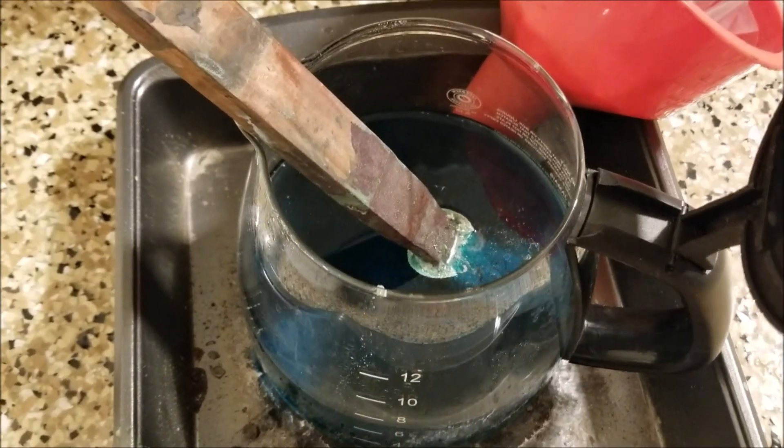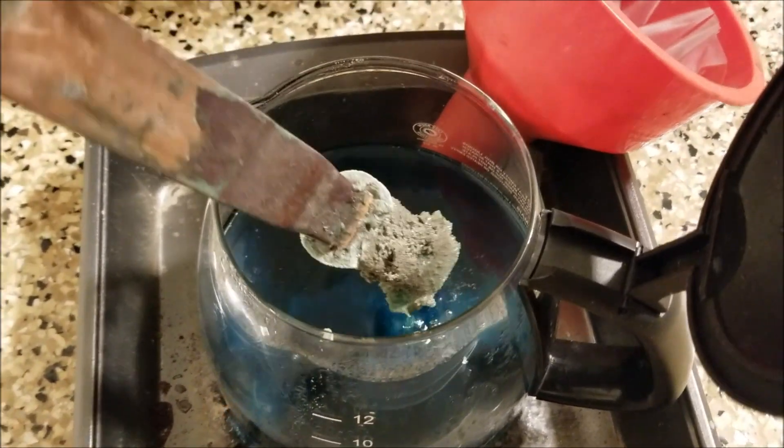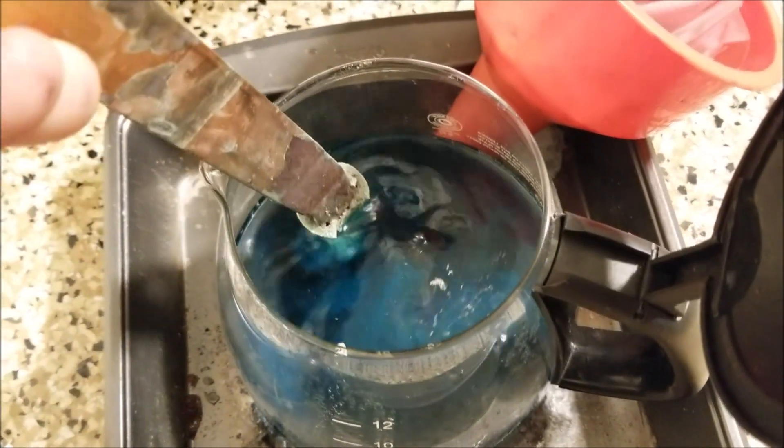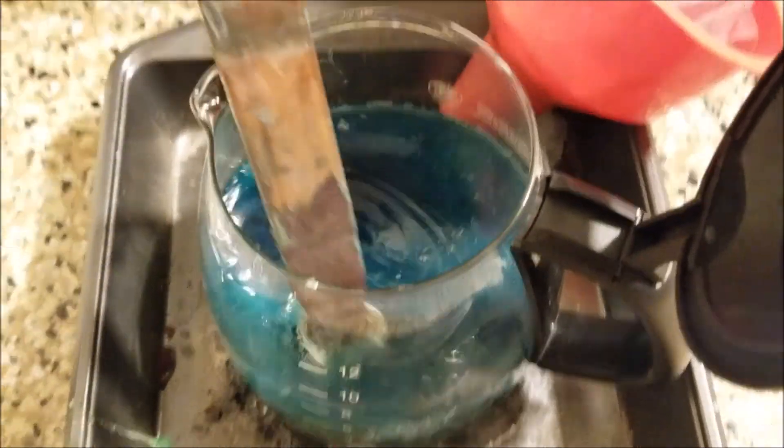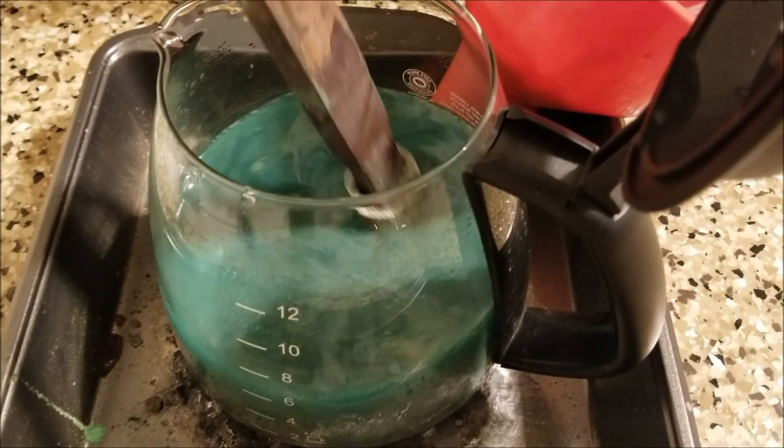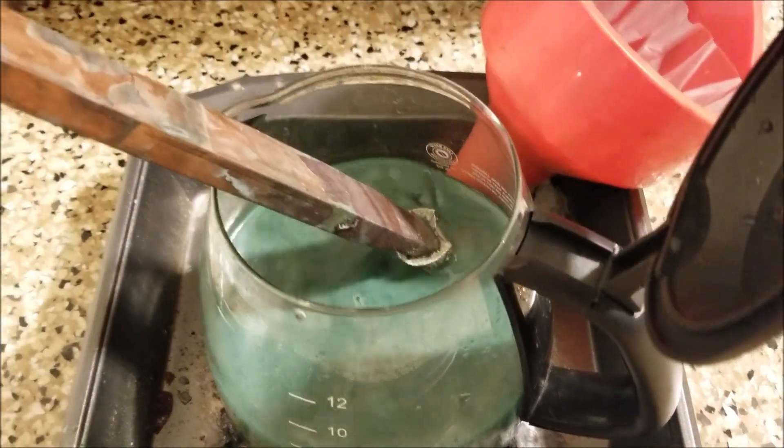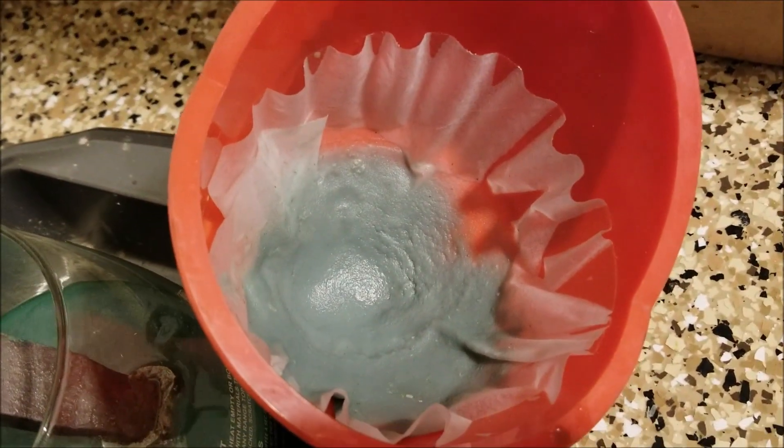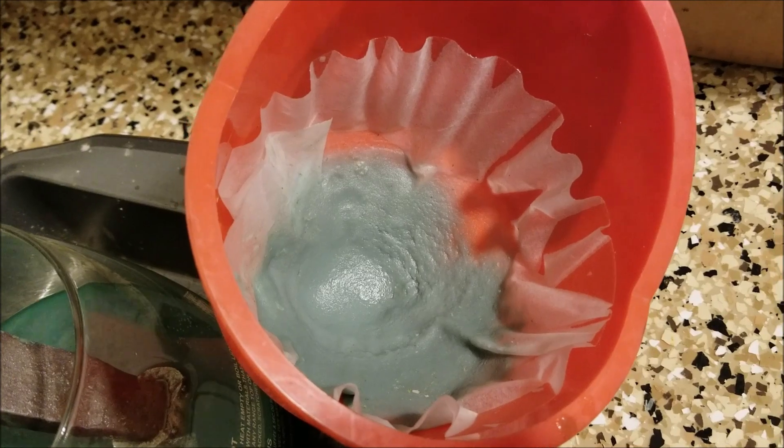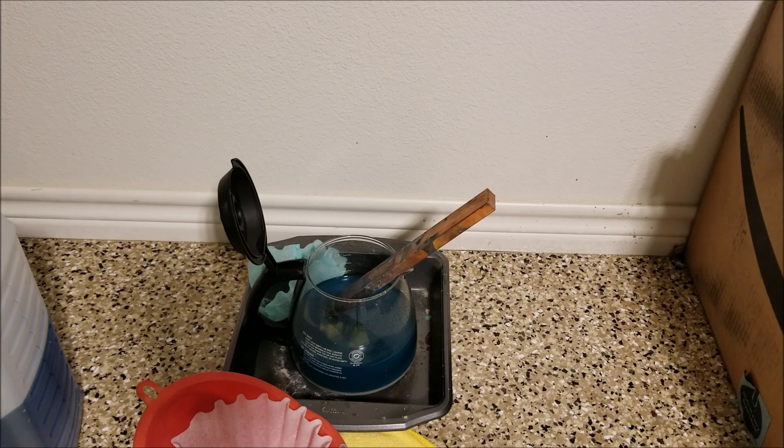Here after sitting about six hours, you can see the precipitate, there's quite a bit of it. Let's get it stirred up again and we'll let it sit overnight. This is what was left from the filter, there's more silver there, so we'll use it in the next batch for dissolving.